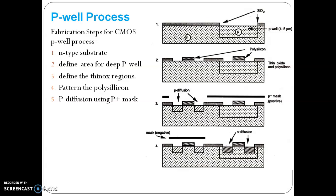The fourth or fifth step is getting the P-type diffusion using P+ mask. There are two masks: one is P+ mask. The same mask is used in negative form to get the N-type diffusion. Once you get P+ mask defining the P diffusions, then we will go for the N-type mask using negative of P+ mask for N-type diffusion.